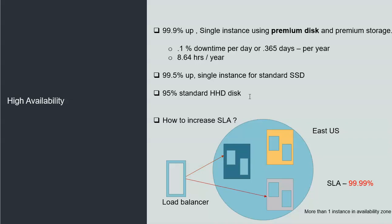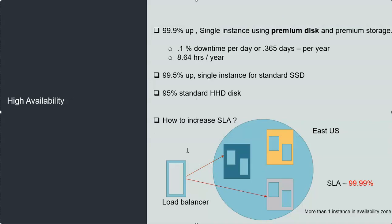These are different SLA types, but suppose you want availability higher than 99.9%. If you are using only one instance, you need to create more instances in different availability zones. If your application is in one particular zone, you need to make it available in another zone as well, connected through a load balancer. If one availability zone fails, the other keeps the application available, increasing the SLA from 99.9% to 99.99% — almost 10 times more available with reduced downtime.